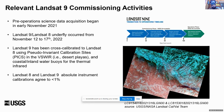Landsat 9 has been cross-calibrated to Landsat 8 using pseudo-invariant calibration sites in the V-sphere and calibrated to coastal inland water buoys for the thermal infrared. The absolute onboard calibrations between Landsat 8 and Landsat 9 agree to less than 1%. This is a really exceptional achievement for both NASA and USGS, and folks can have a whole lot of confidence in the calibration of this data.